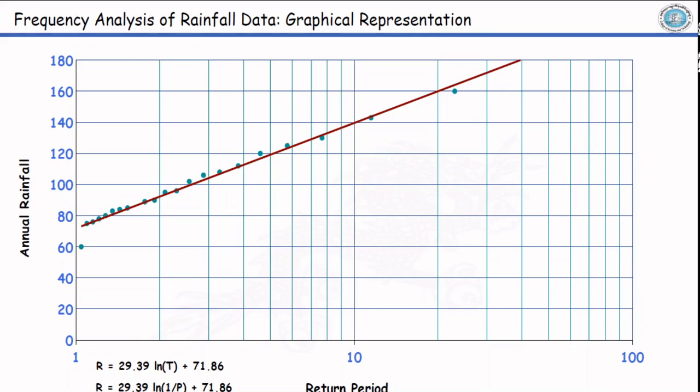The question was, what was 10 years return period and what is 50 years return period magnitude? At 10 years, we simply go here. 40 centimeter is the 10 years return period magnitude. And likewise for 50 years, if the chart is too small here, we can use the equation to estimate the rainfall magnitude. I simply substitute the value of 50 here and I get the magnitude.